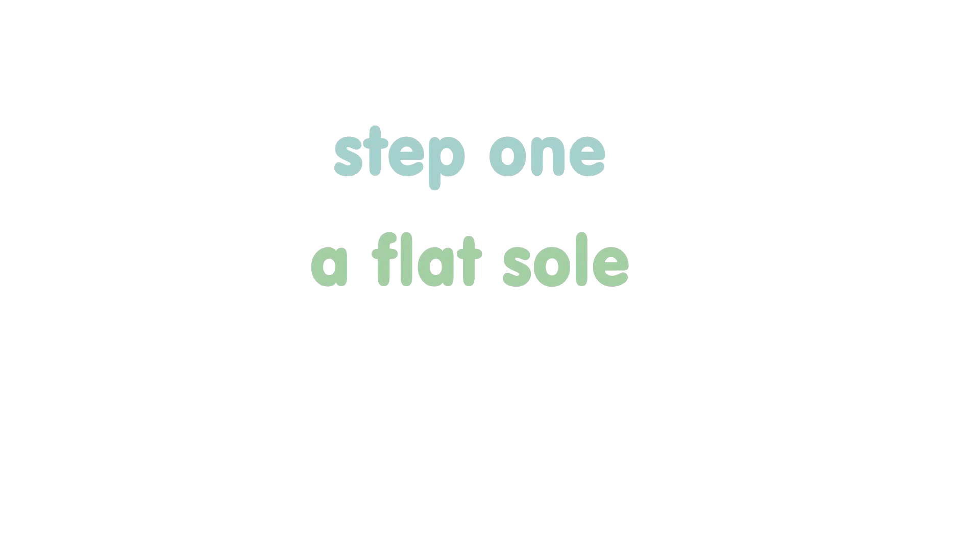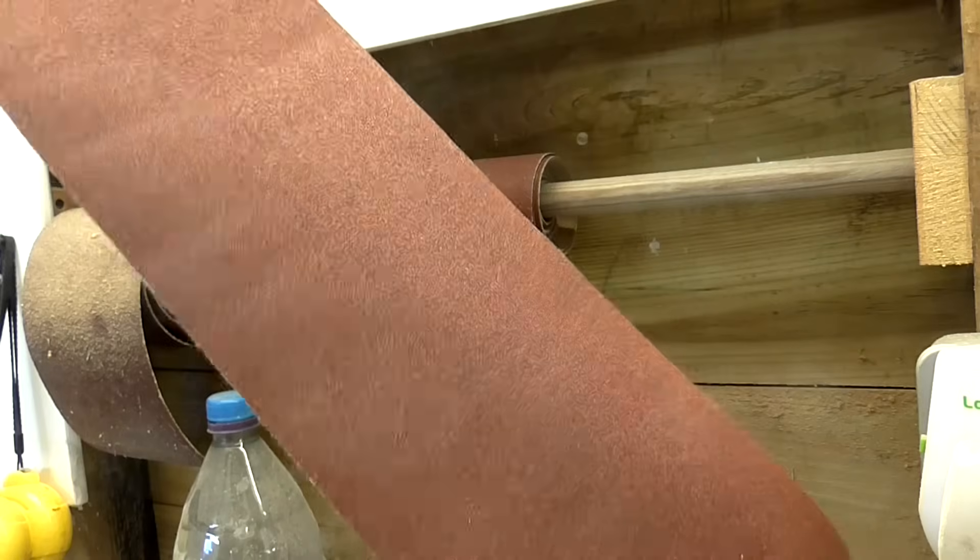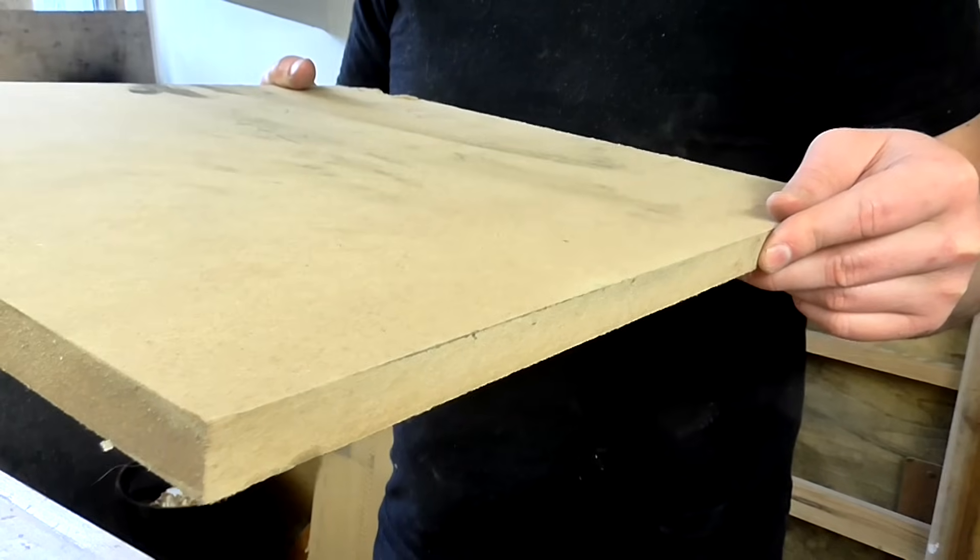Flat sole. The sole of the plane should be as flat as possible. The easiest way I've found to check for flatness is to use some 120 grit abrasive paper on a known flat surface.